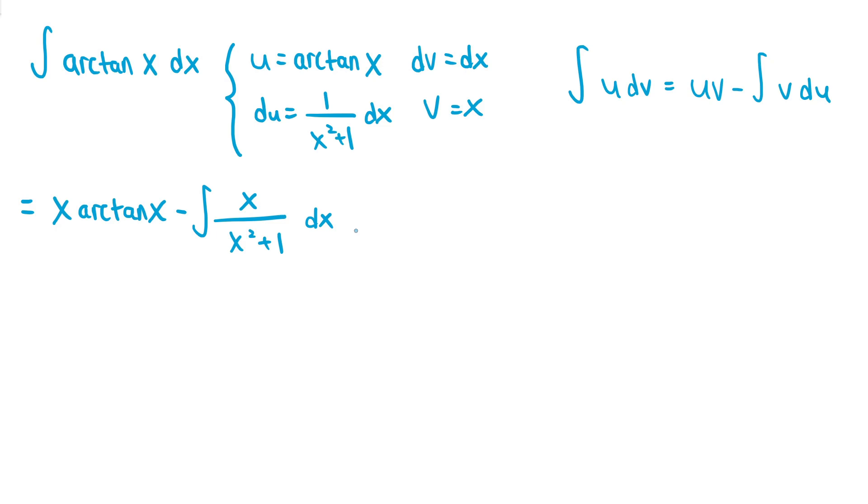We already have an x in the numerator, so we just need to bring out a constant multiple of 1 half out of the integral. So we can rewrite this expression as x arctan of x minus 1 half times the integral of 2x over x squared plus 1 dx.